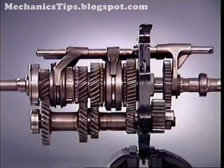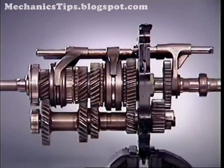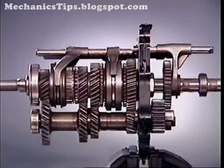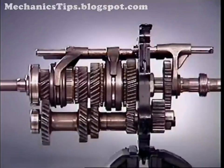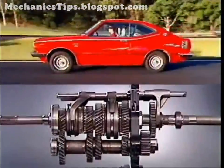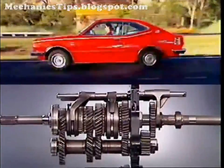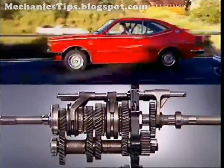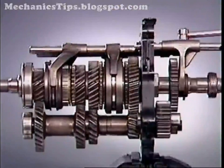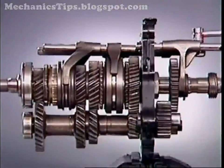The counter shaft gears and their corresponding gears on the main shaft continue to rotate, as the counter shaft is constantly in mesh with the input gear, but they do not transmit any drive. With the vehicle in motion, these gears will be turning at different speeds in relation to the main shaft and to the engagement sleeve, which is locked to the main shaft by the spline. When changing gear, their speeds must be synchronized so that the engagement sleeve can move smoothly into engagement.